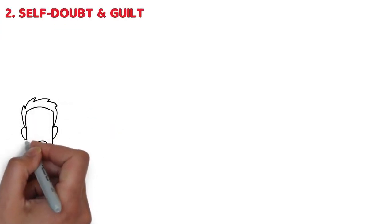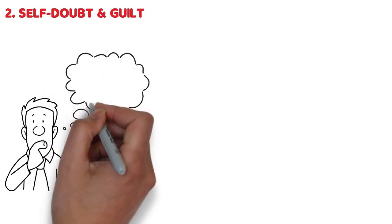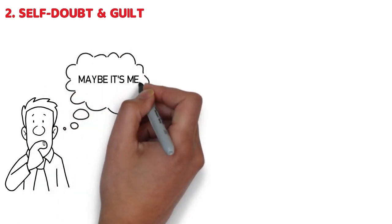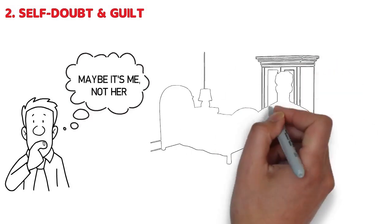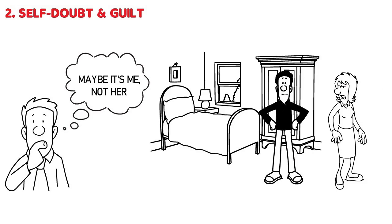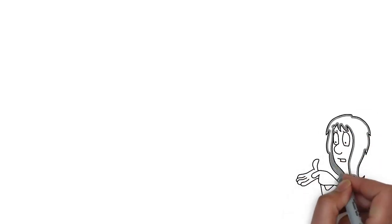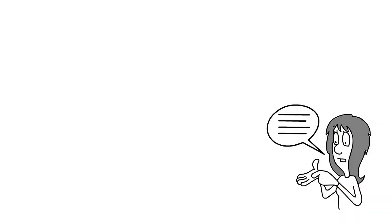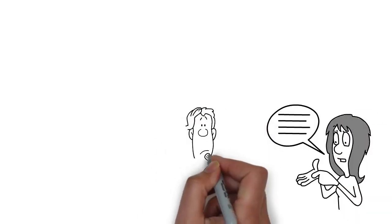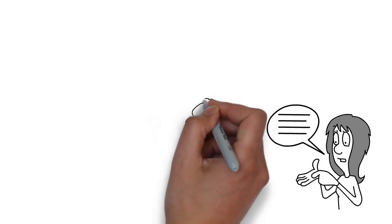Number 2: Self-Doubt and Guilt. Moving on to the sneaky beast called self-doubt. You know, that little voice in your head that starts whispering, maybe it's me, not her. It's like having an annoying roommate who's always putting you down, except this one's inside your head, and boy, does it love to talk. When you're with someone who's got a knack for making everything seem like your fault, the voice gets louder. She'll twist things around so much that you start to question your own memories and feelings. Suddenly,